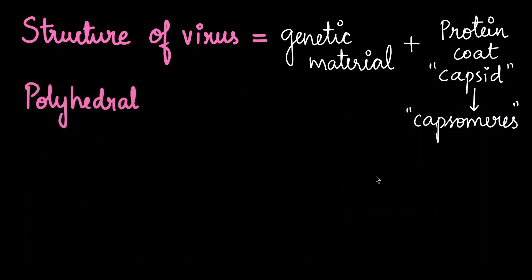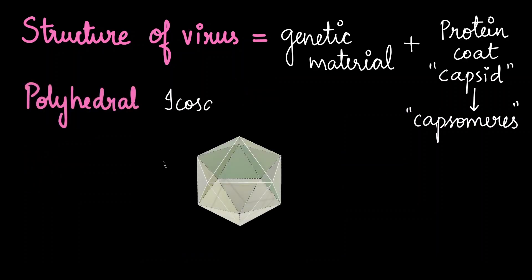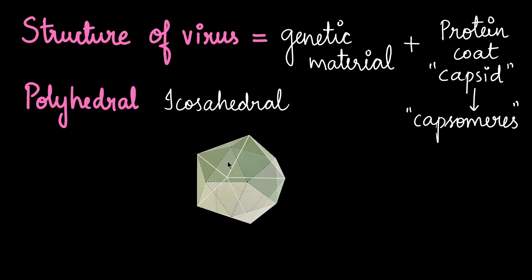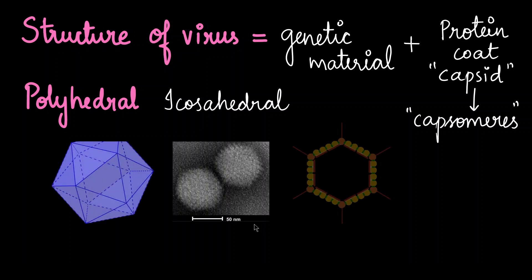Then comes the polyhedral shape, specifically the icosahedral shape. This is what we saw earlier as an example. And this is how they appear. The second image here is the actual picture of a virus taken by a very powerful microscope called the transmission electron microscope. Adenoviruses have polyhedral shapes.